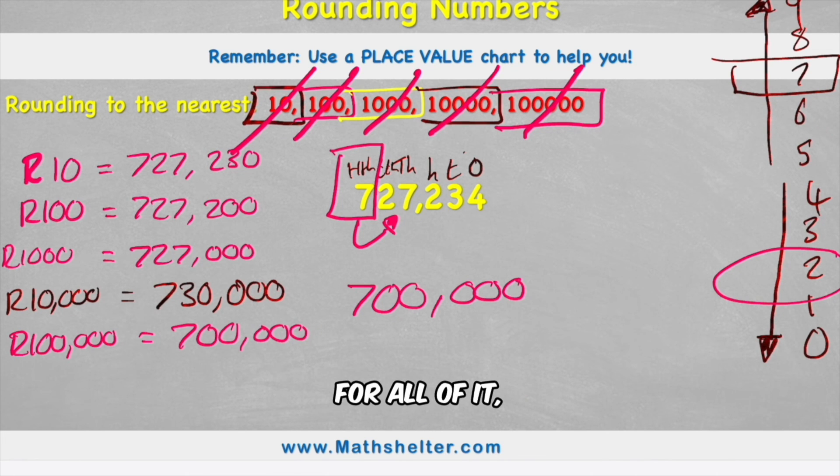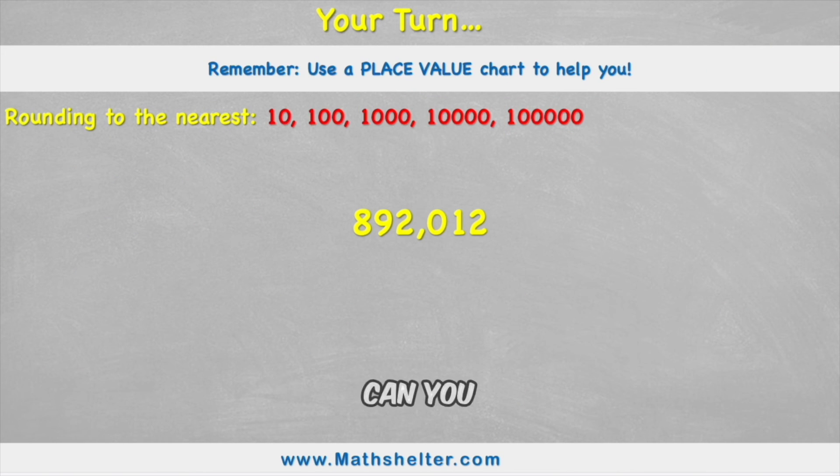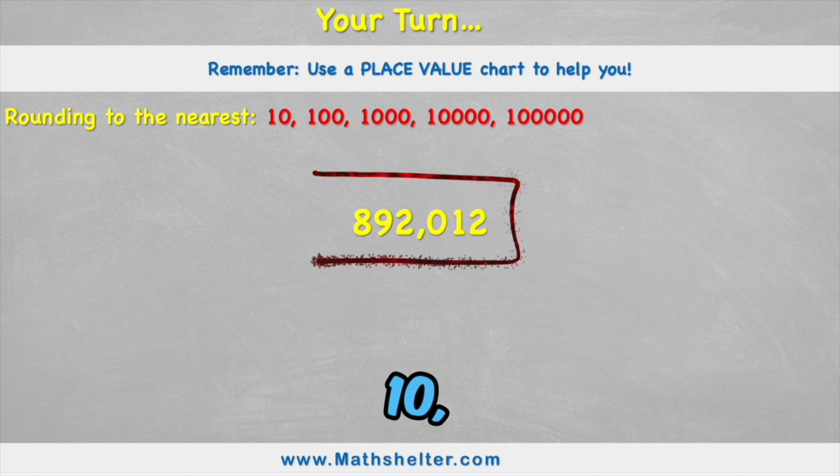Same process for all of it we just have to look next door to the column that we're interested in to see whether we're going to round up or down. So it's your turn have a look at this number here. Can you round this to the nearest 10, 100, 1000, 10,000 and 100,000?